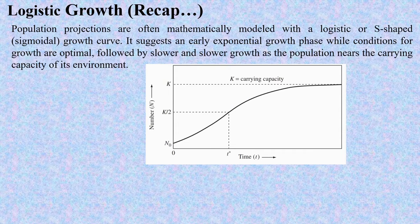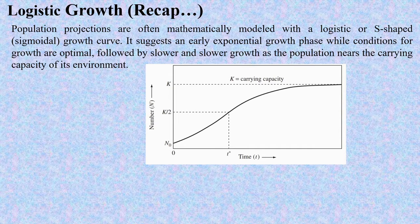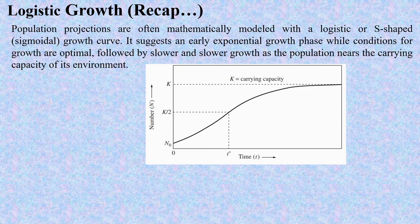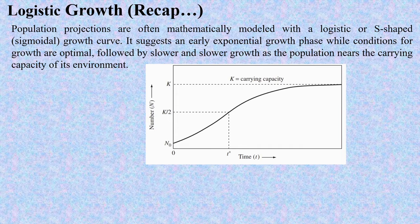Population projections are often mathematically modeled with a logistic, or S-shaped, that is sigmoidal, growth curve. It suggests an early exponential growth phase while conditions for growth are optimal, followed by slower and slower growth as the population nears the carrying capacity of its environment. You can see the graph there, and I made a detailed video on logistic growth, so for details please visit my earlier video whose links are given in the description box.